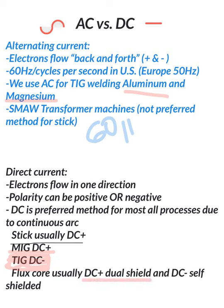Flux core is usually DC positive with dual shield and DC negative with self shield. So this one is half and half. If you're a self-shielding kind of welder doing a home project, you get one of those little Lincoln 140s, probably using a self shield wire, DC negative.